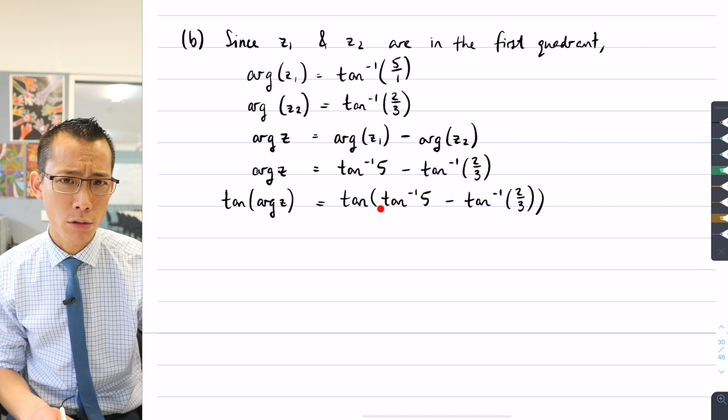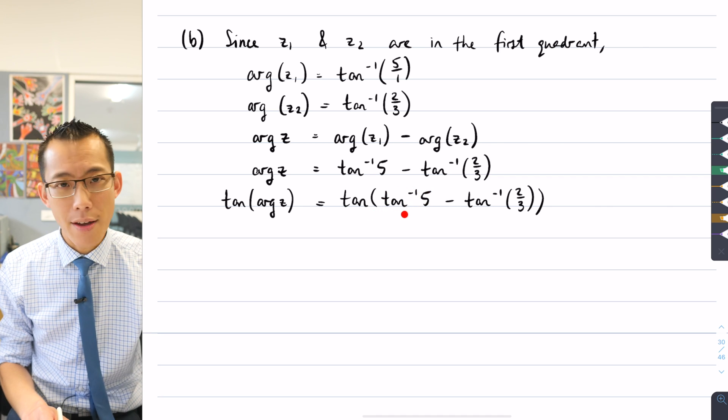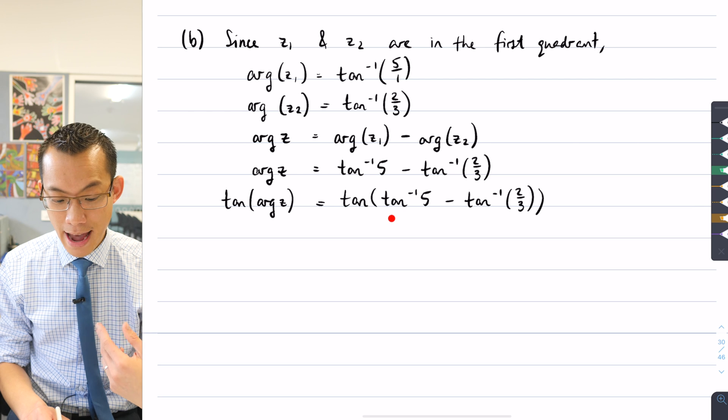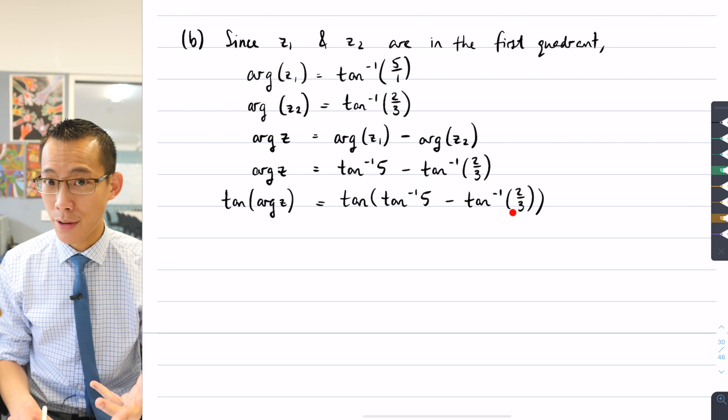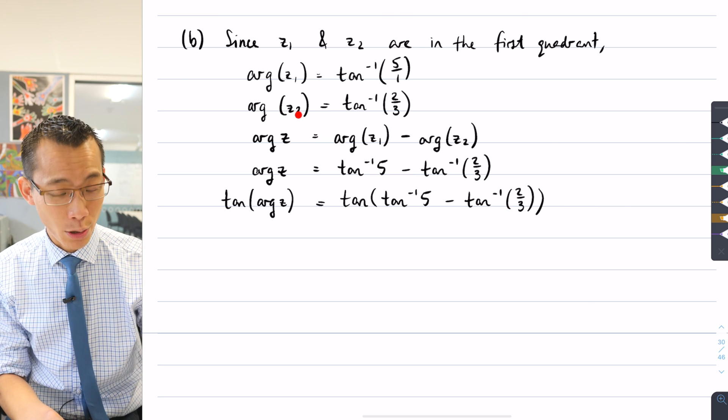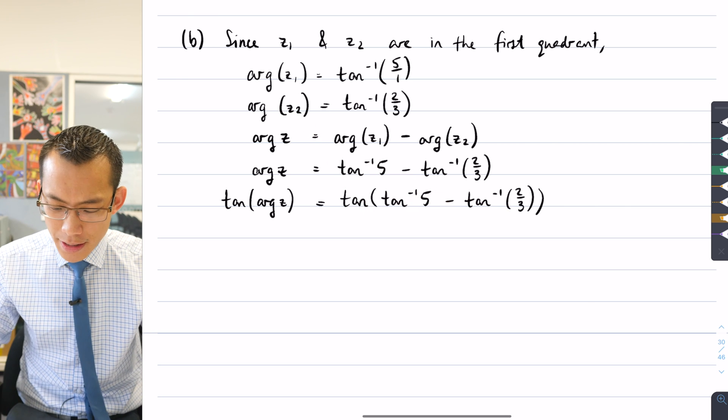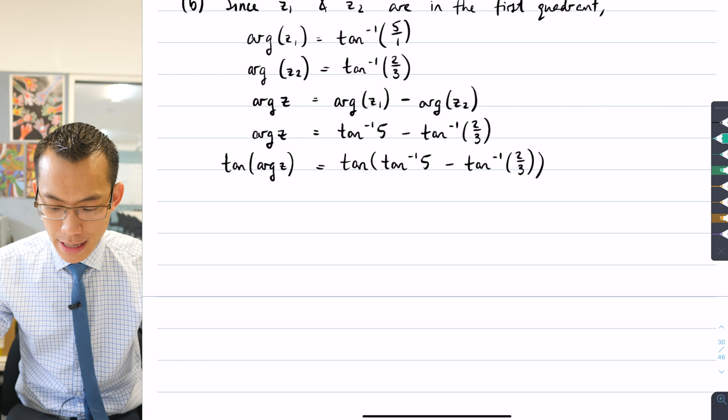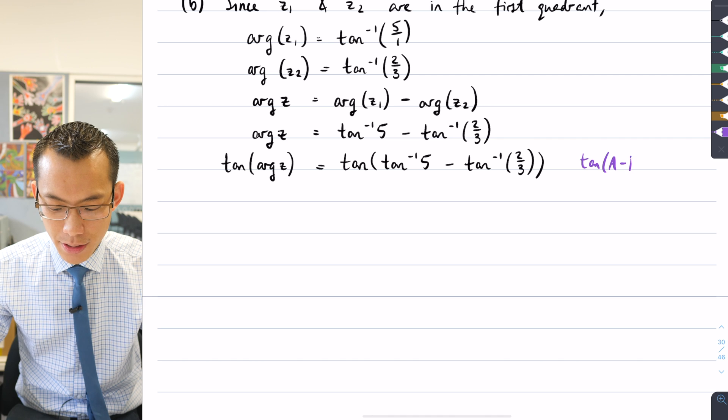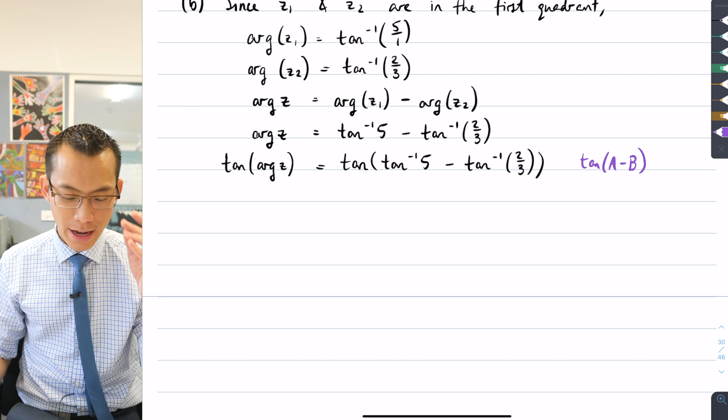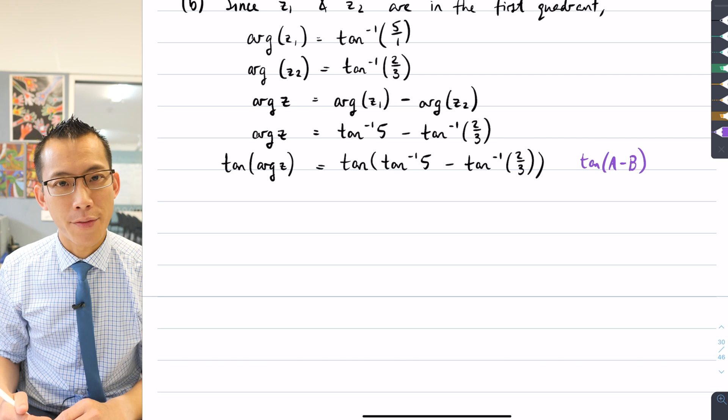Maybe it doesn't look like that—remember, tan inverse of 5 is an angle, it's the argument to z1, and tan inverse of 2 thirds is also an angle, it's the argument to z2. So really this is actually, I could write this as tan of a minus b, where a and b—capital A and capital B—are the angles involved.